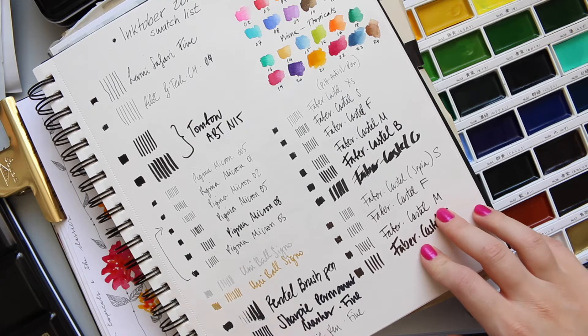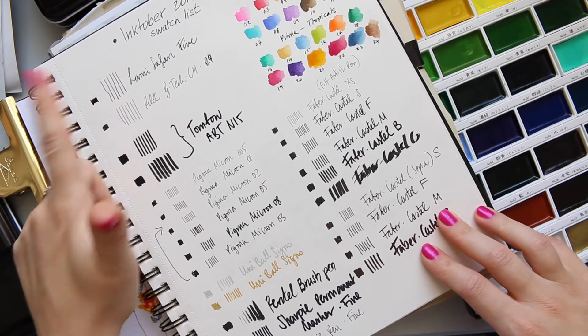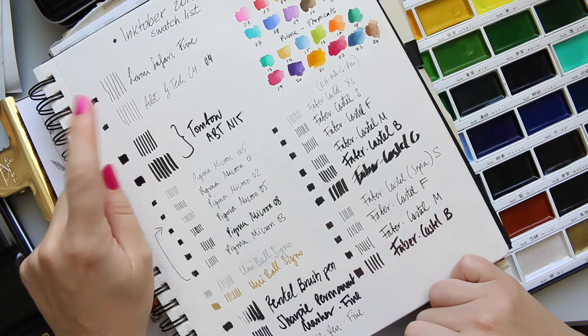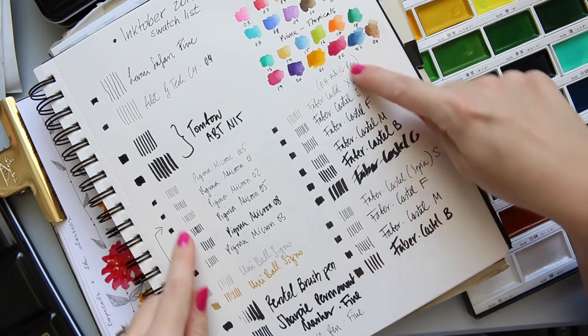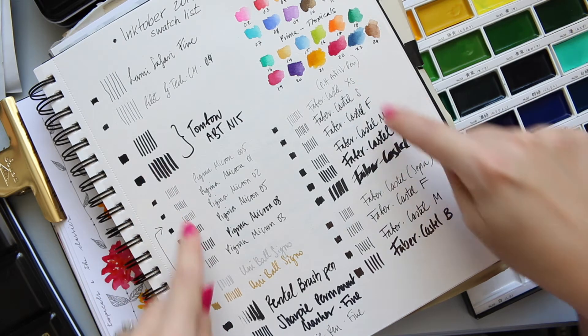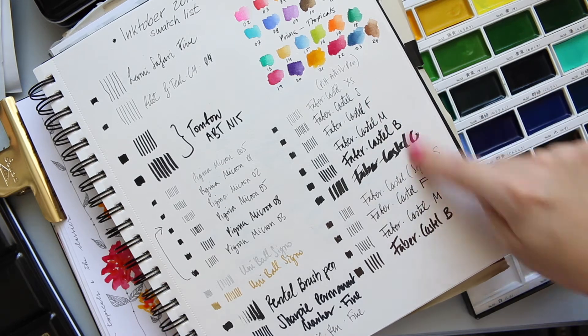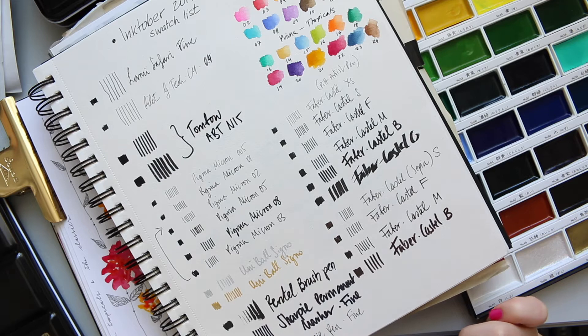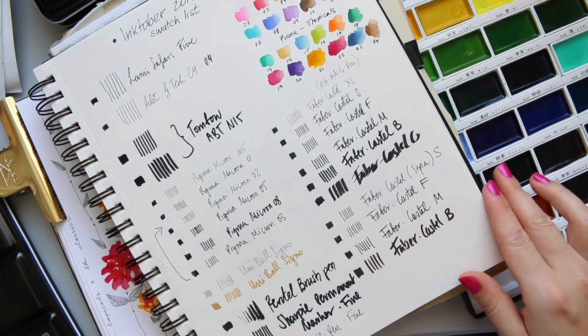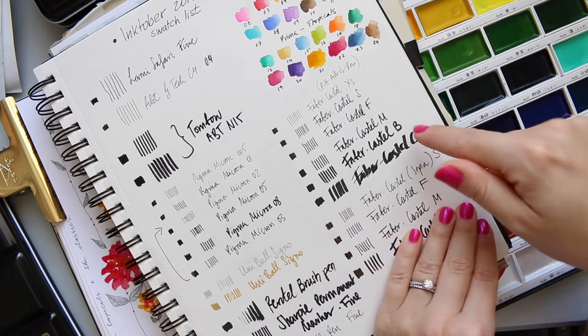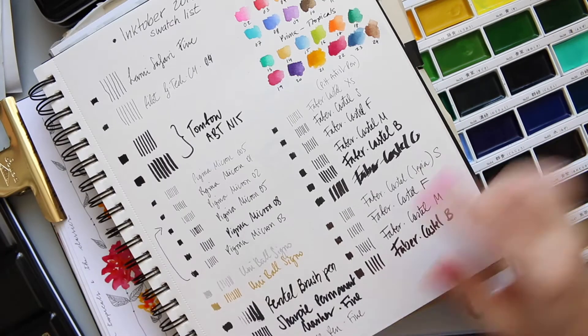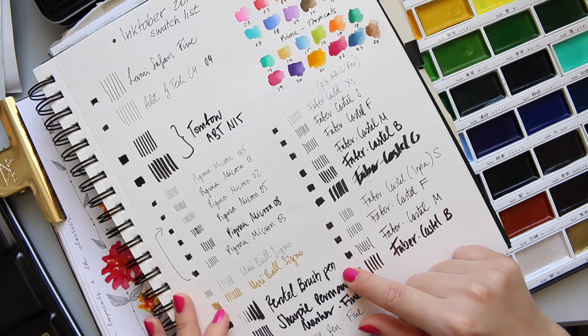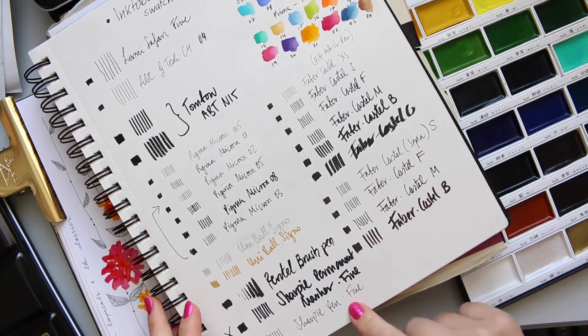Here's a number of pens including Lamy Safari Fine, Pilot G-Tec-C4 which is my favorite for illustrating. Both of those inks are water soluble, then Tombow, Pigma Micron and Faber-Castell. I think both of them are waterproof. Then I have Faber-Castell in two colors, black and sepia, and there is also silver and a gold Uni-Ball Signo. The Sharpie permanent did bleed through. It's the only one that bled through, so I did that swatch list to see whether the paper could handle it.